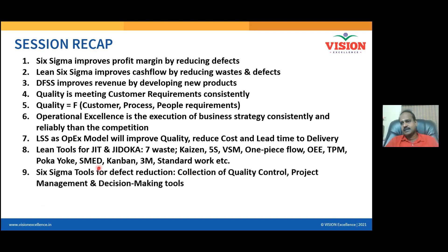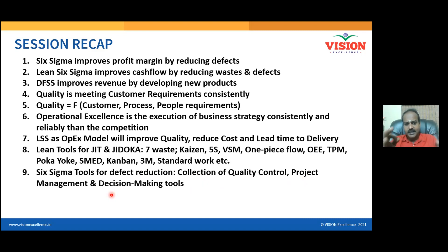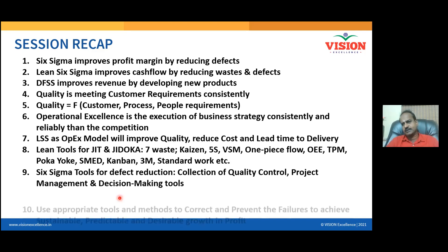Standard work ensures that whoever does the job produces the same results, so customer experiences are always at their best. Six Sigma doesn't have its own exclusive tool set — Six Sigma is an approach, an amalgamation of several quality management approaches developed by Motorola's Bill Smith and Michael Harry. The Six Sigma toolkit is a collection of quality control tools: seven QC tools, seven management tools, project management tools, problem-solving tools, and decision-making tools. If a tool helps achieve defect-free products and world-class customer experience, it can be called a Six Sigma tool.